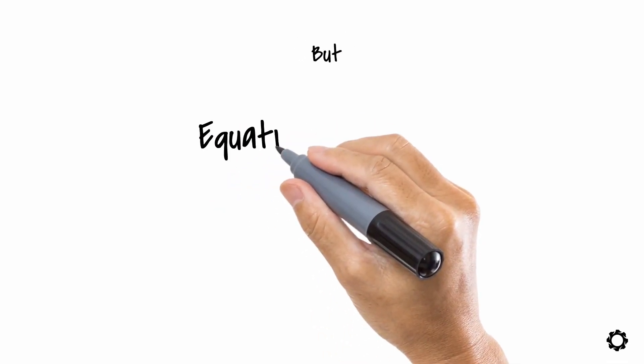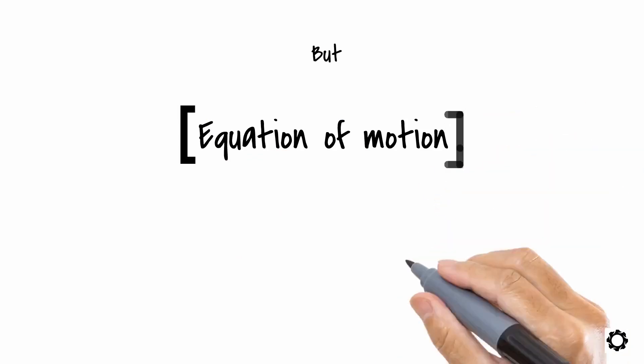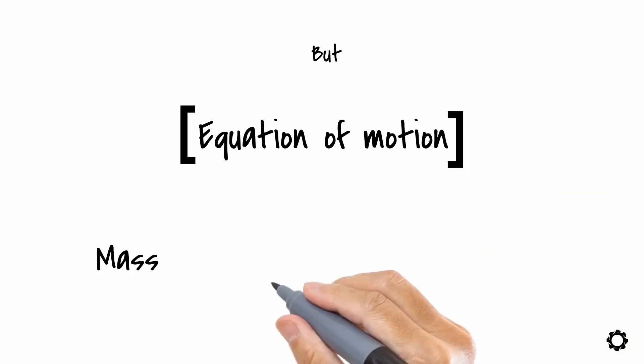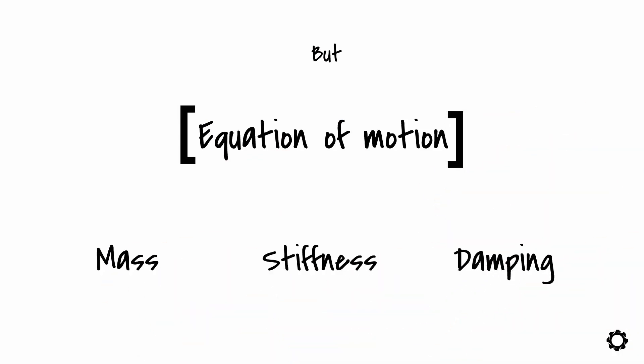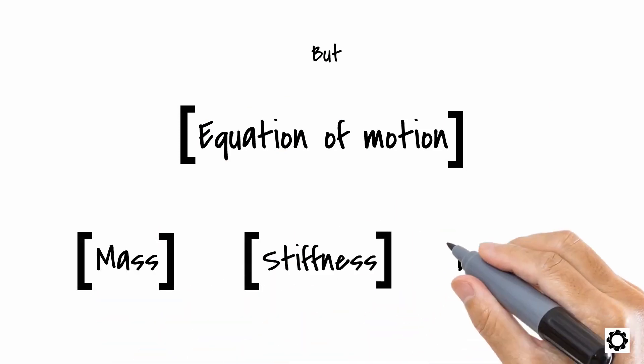But, there is always a but. You need to have the equation of motion of the system in matrix form. More specifically, we have to know the mass, stiffness, and damping, and all of these in matrix form. Then a simple command will give us the answer.